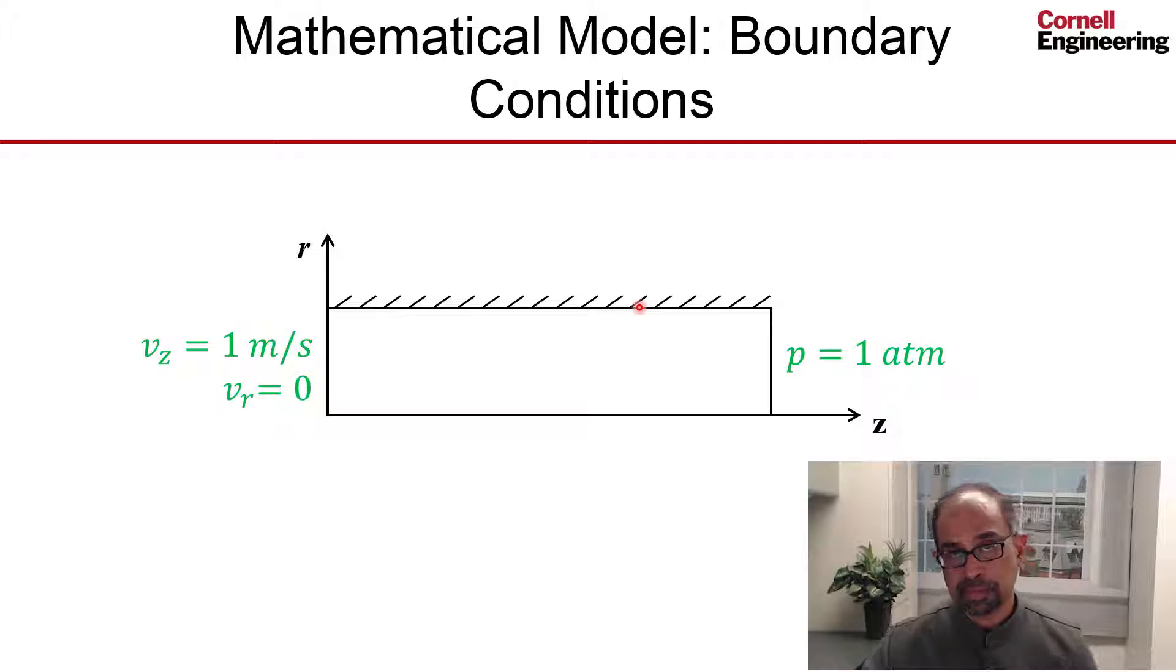This is the wall, and at the wall, the flow sticks to the wall. When viscosity is present, that's called the no-slip condition, so we'll set both components of the velocity to be zero at the wall.